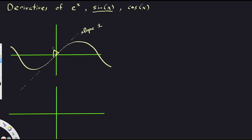If you stand right at the origin, your arms will be at about a 45-degree angle upwards. So the derivative of sine at 0, when x is 0, is 1. The derivative is given by the slope of the original function. The other useful landmarks are the peaks and valleys, because at a valley or peak, the slope is 0. So down in the derivative graph, you'll see a 0 at those locations. The y-location in the derivative is the slope of the original function.